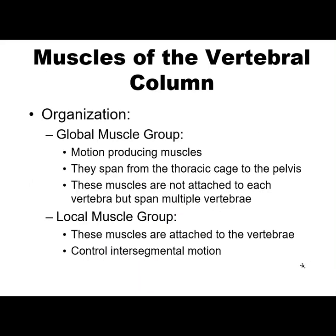This is a large muscle group — the paraspinal muscle group. They are motion-producing muscles and span from the thoracic cage to the pelvis. They are not attached to each vertebra but sometimes span multiple vertebrae. This is what we call the global muscle group of the paraspinal or vertebral column muscles. Then you have the local muscle group — these muscles are attached vertebra to vertebra and control intersegmental motion. Since they are small with a very small moment arm, they are not the prime movers; those are the global muscles.